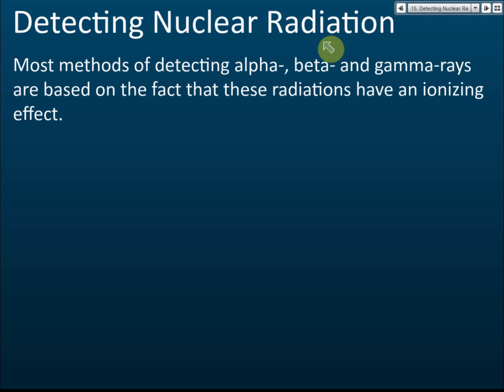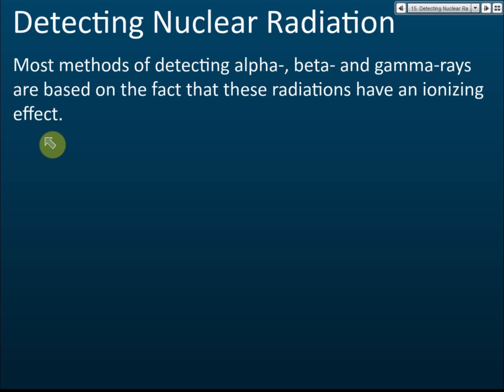Detecting nuclear radiations: most methods of detecting alpha, beta, and gamma rays are based on the fact that these radiations have an ionizing effect. We detect them by detecting the ionizing effect of these three emissions. The film badge or photographic plate is an exception — it uses the photographic effect. All other methods use the ionizing effects of radioactive emissions to detect the presence of radioactivity.